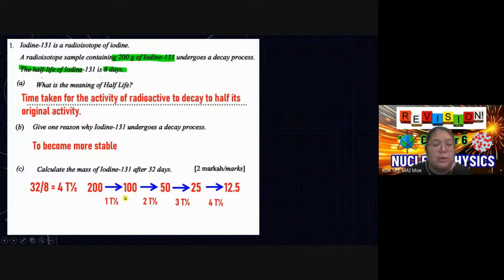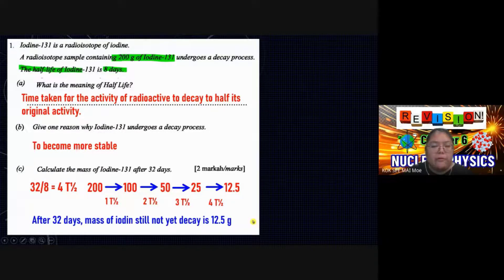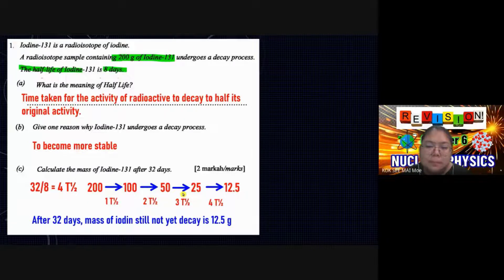After 32 days, the mass of iodine that has not yet decayed is 12.5 grams. Be careful — the question can ask how much has already decayed, or how much has not yet decayed. Here, after 32 days, 12.5 grams of iodine still remains.